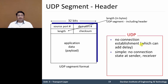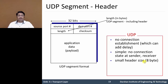UDP cannot keep any state about the sender and receiver, like congestion control parameters, in case of congestion, acknowledgement parameters, and sequence parameters. So UDP is said to be connectionless. It has a small header size, meaning less overhead — 8 bytes only.